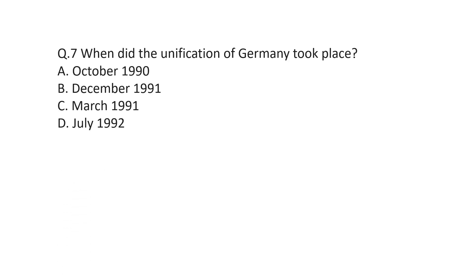Question number seven: when did the unification of Germany take place? Option A is October 1990, B is December 1991, C is March 1991, or D is July 1992. Germany's unification was in October 1990, so the correct answer is A.